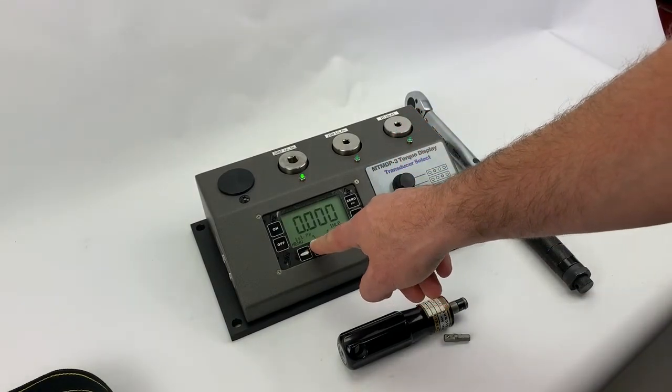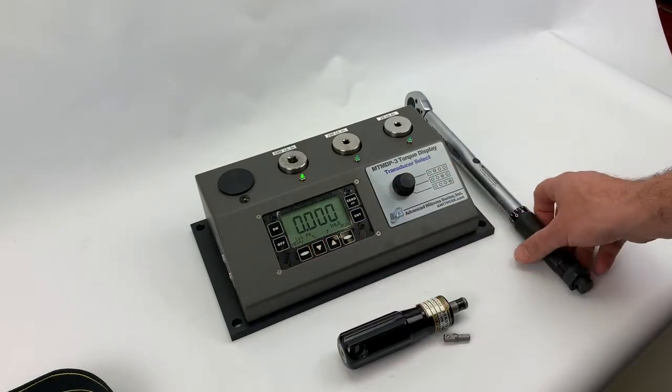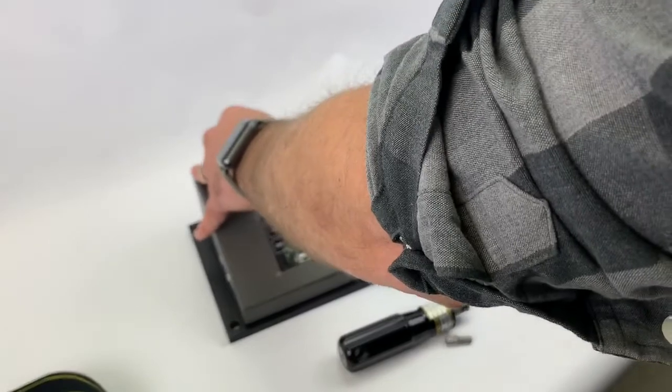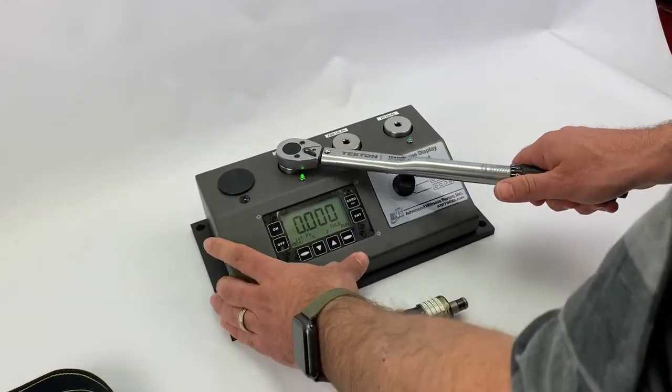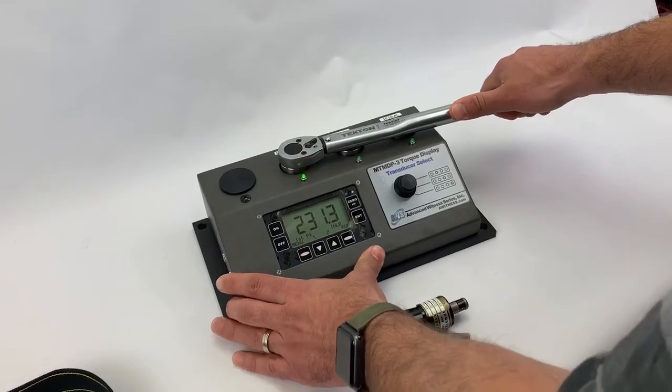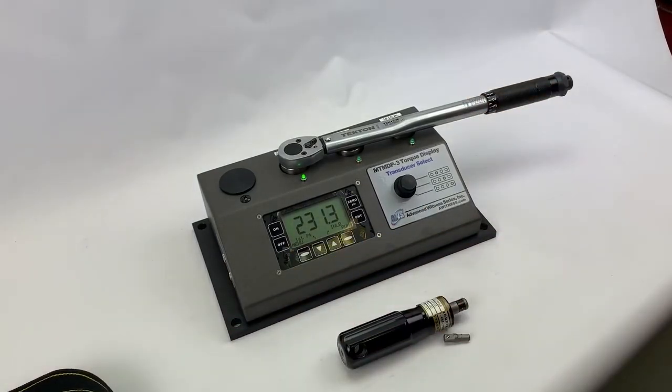I would change the mode to first peak, which is appropriate for click tools. I will put the wrench in and give it a pull until it clicks, and you'll see the torque.